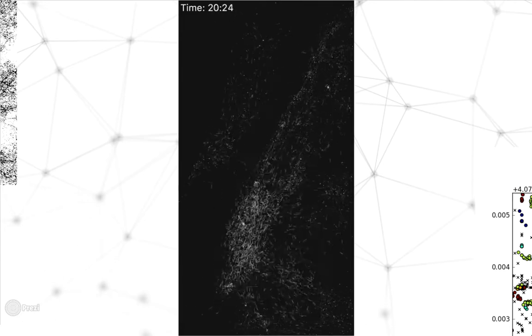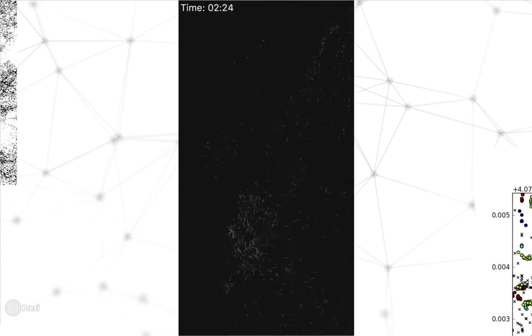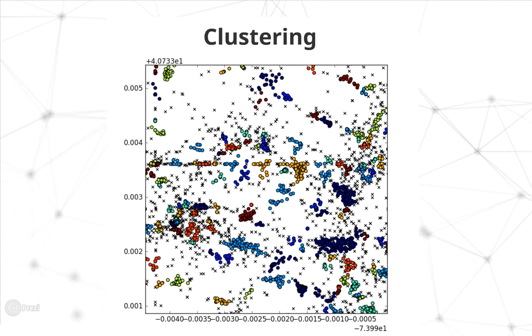Next, using a density-based clustering algorithm, we clustered clouds of points into specific locations. You can see in this image clusters plotted in different colors as well as unclustered points plotted with black X's.